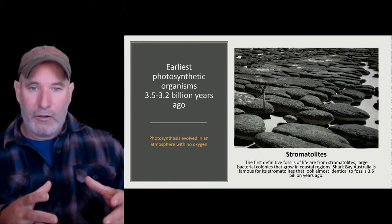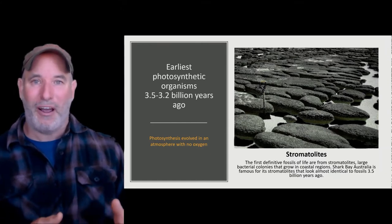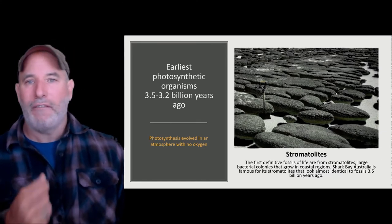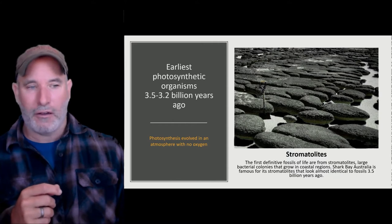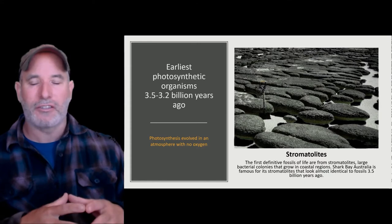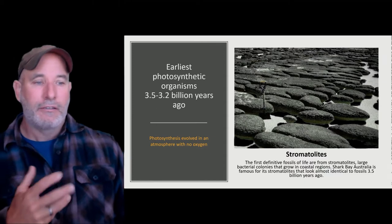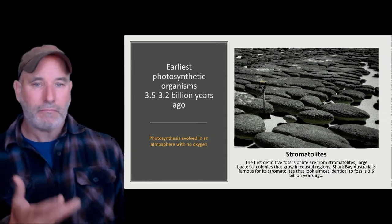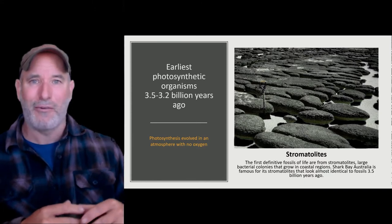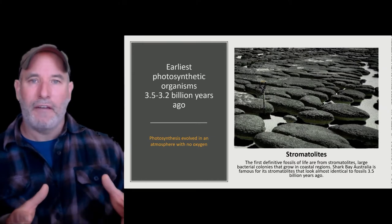So life evolved. It was definitely before 3.5 billion years ago because we have stromatolites at that age, which are bacterial colonies. There's good evidence for life 3.7 to 3.8 billion years ago, and probably as early as 4 billion years ago based on isotope signatures. These stromatolites, photographed in Shark Bay, Australia, represent bacterial colonies. We think photosynthesis began really early on in life.